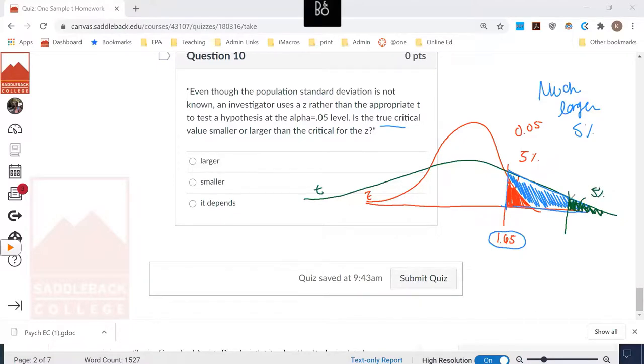So this portion of the distribution is going to be 5%. So this critical value is going to be much larger than the 1.65 because they're all on the same scale. This is 1.65. This number is larger than 1.65.